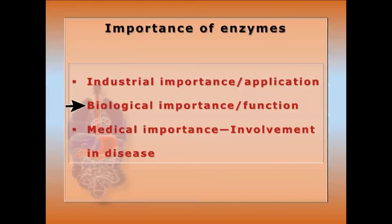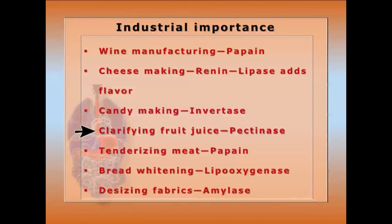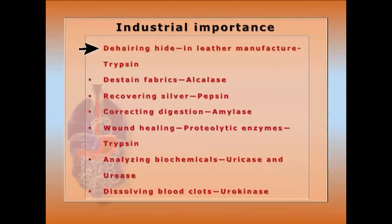Industrial importance: wine manufacturing requires papain; cheesemaking requires renin; candy making requires invertase; clarifying fruit juice requires pectinase; tenderizing meat requires papain; bread whitening requires lipoxygenase; desizing fabrics requires amylase; dehairing hide requires trypsin; and destaining fabrics requires alkalase.